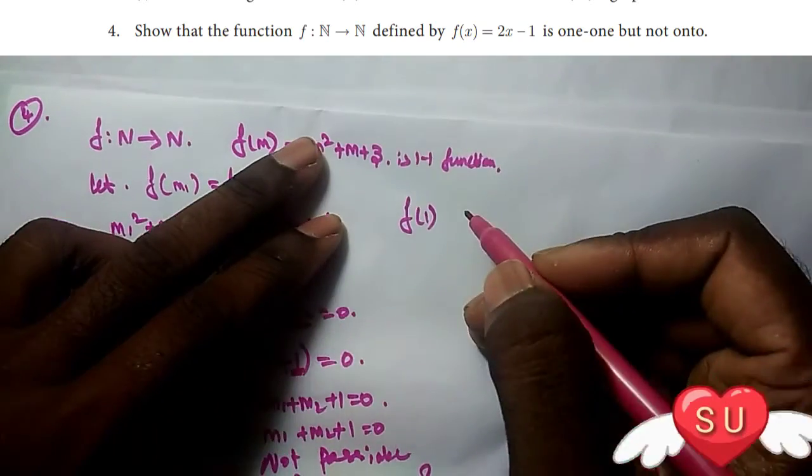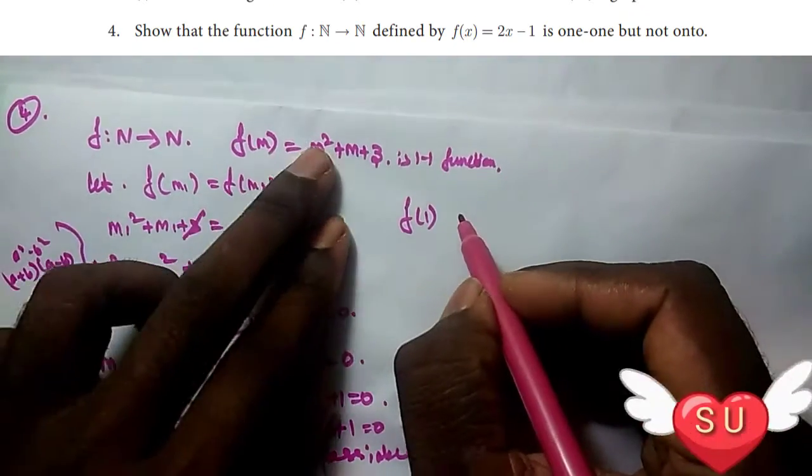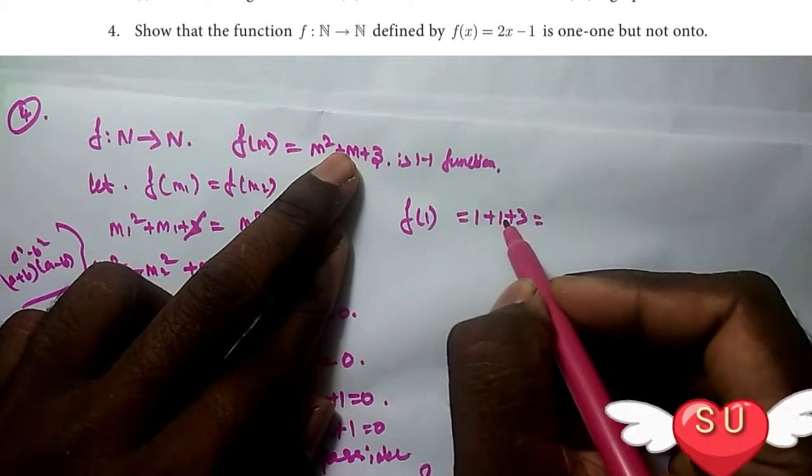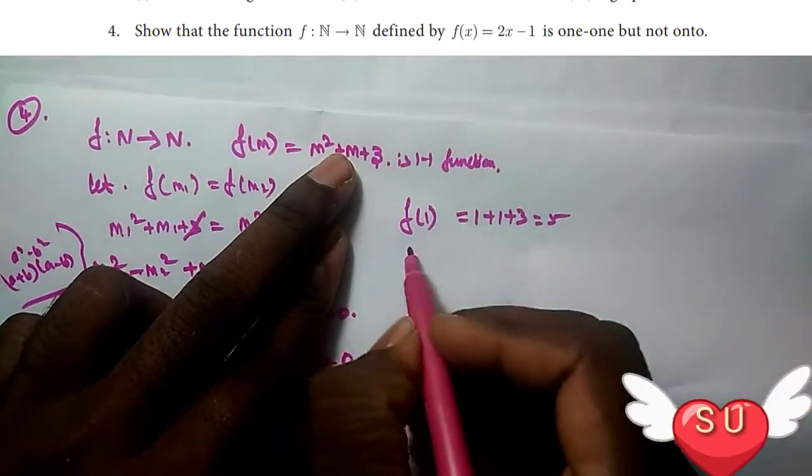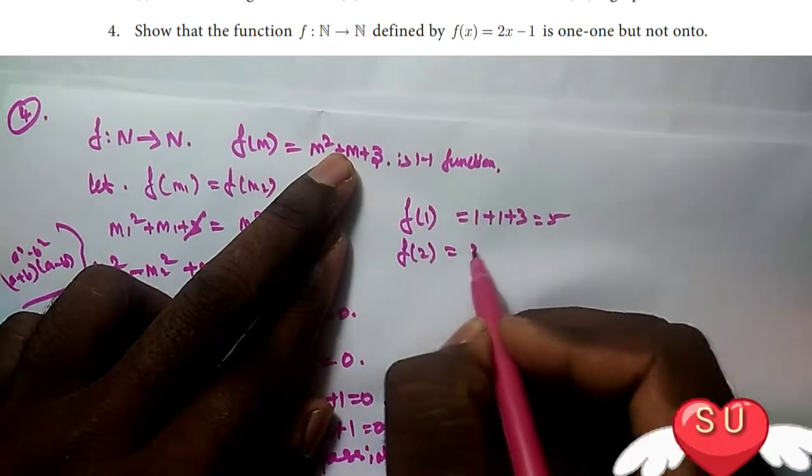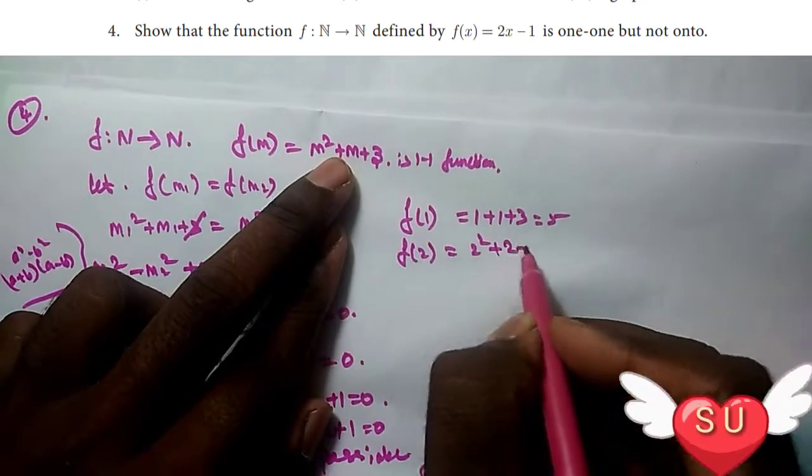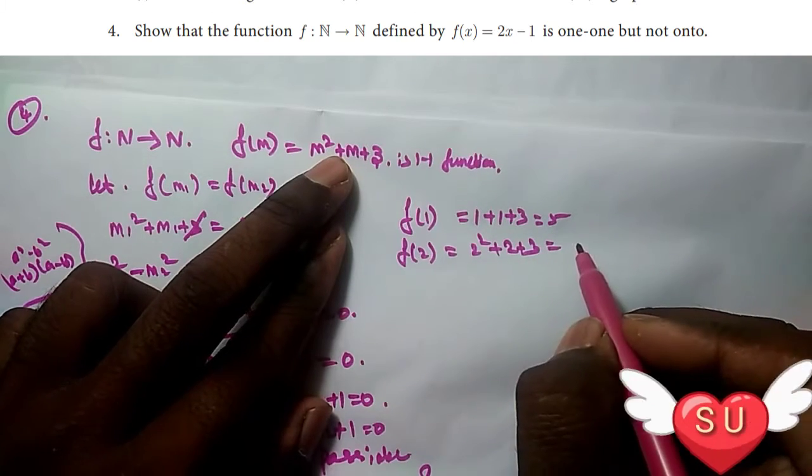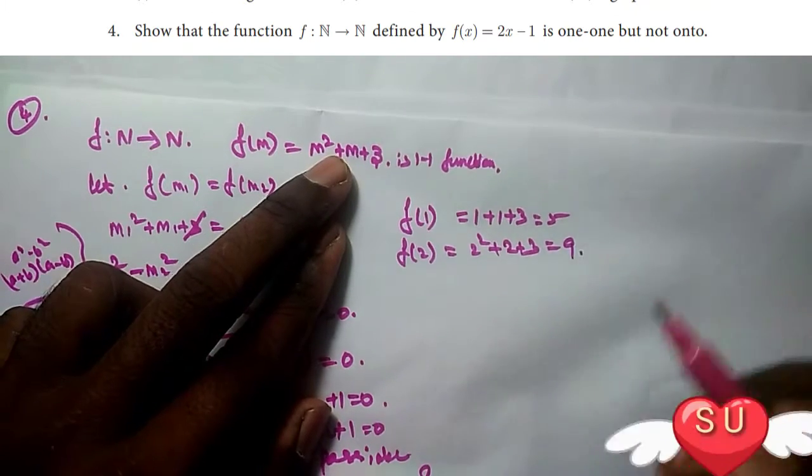Let's verify with examples. f(1) equals 1 squared plus 1 plus 3, which is 1 plus 1 plus 3 equals 5. f(2) equals 2 squared plus 2 plus 3, which is 4 plus 2 plus 3 equals 9.